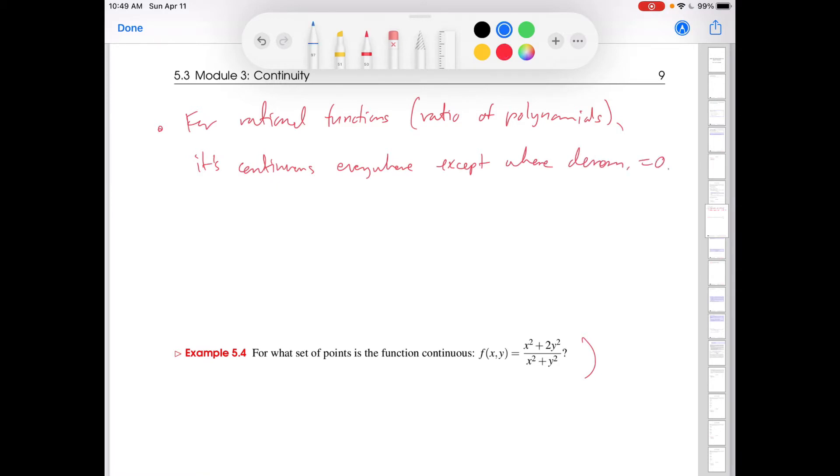So for a function that's a ratio of polynomials, it's continuous everywhere except where the denominator equals zero. We saw that in the single variable context. For example, if I looked at the function f(x) equals x over x squared minus one, then this would be continuous on R minus the points negative one and one. Two things to mention here. How did I get negative one and one? Well, I set x squared minus one equal to zero, and then I'm just going to factor this difference of squares, and then that gives me x equals plus and minus one.